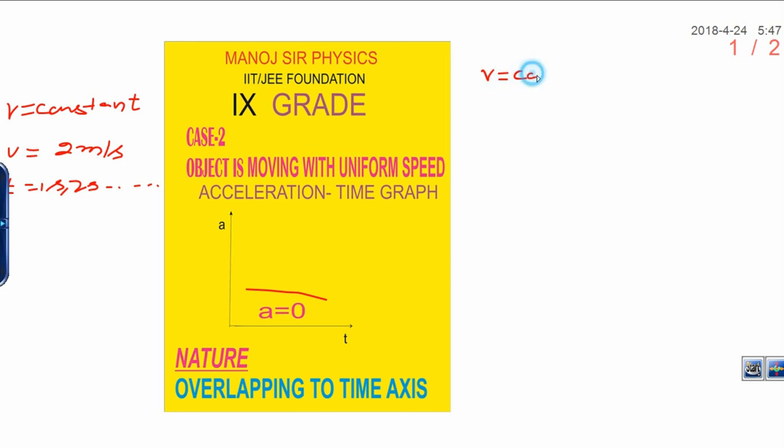You know speed is constant. What is acceleration? Acceleration is change in speed or velocity upon change in time. But change in speed is zero because speed is constant. No change is there. Divide it by delta t, and finally acceleration becomes zero.